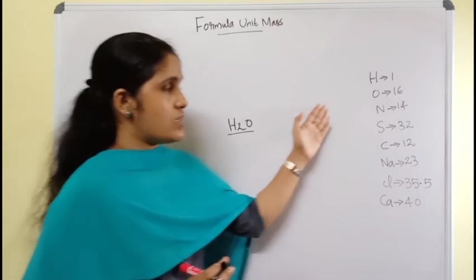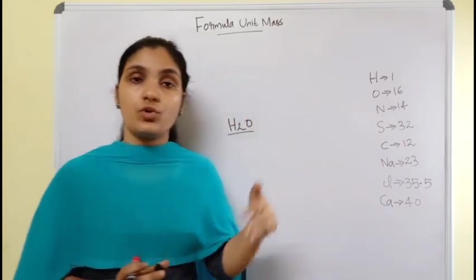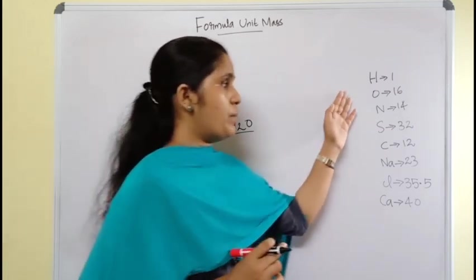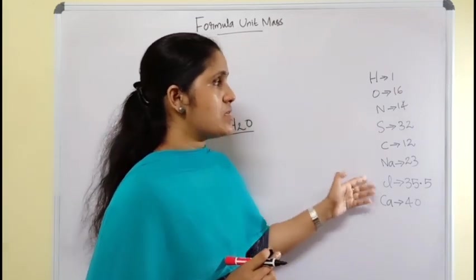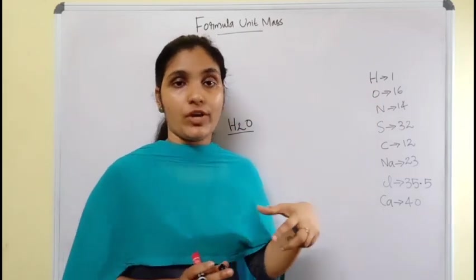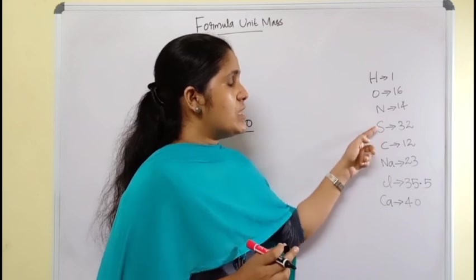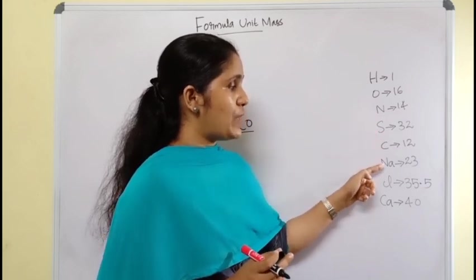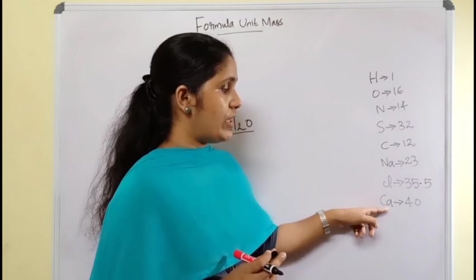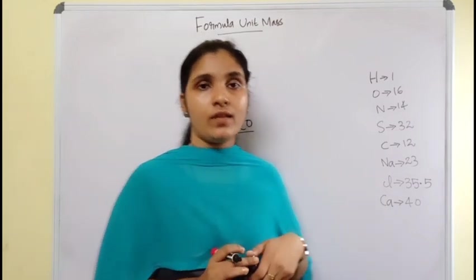The basic requirement to calculate formula unit mass is knowing the atomic masses of elements. Hydrogen is 1, oxygen is 16, nitrogen is 14, sulfur is 32, carbon is 12, sodium is 23, chlorine is 35.5, and calcium is 40.